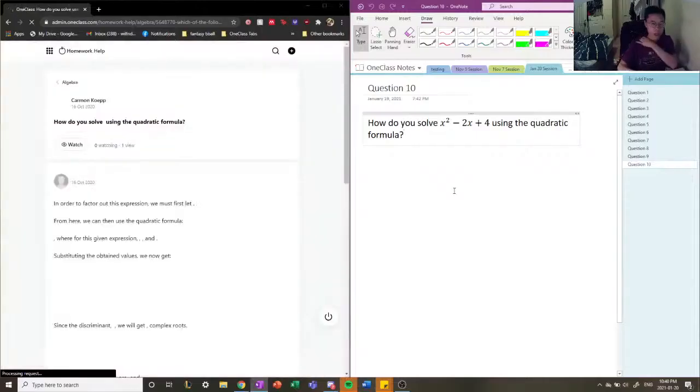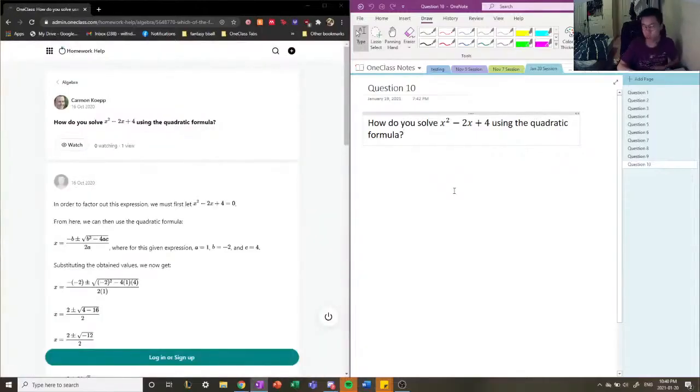How do you solve x squared minus 2x plus 4 using the quadratic formula? When they're asking us to solve it, they're asking us to find the zeros and describe what the zeros are. It makes this quadratic function equal to zero. So they're asking us for the values of x which makes this quadratic equal to zero.